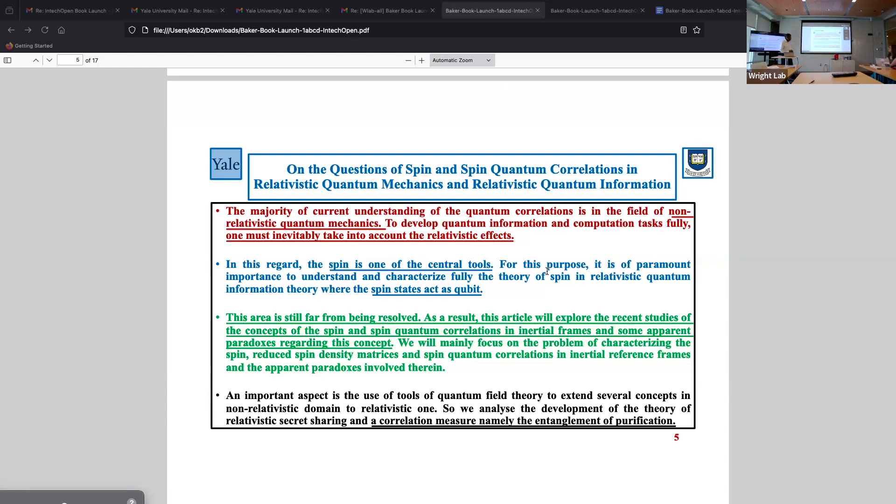After I had already put that chapter on it, they sent books, and they knew in advance, just what I thought, that the majority of current understanding of the quantum correlation is in the field of non-relativistic quantum mechanics. This is in atomic molecular optical physics as an example.